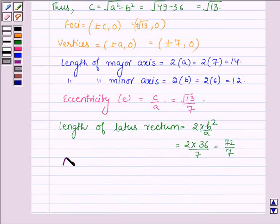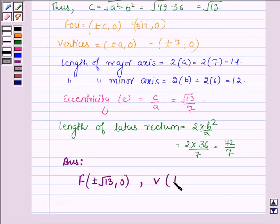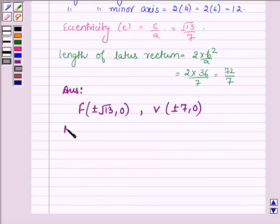Hence, our answer is: the foci for the given equation of the ellipse are (±√13, 0), its vertices are (±7, 0), and the length of its major axis is 14.